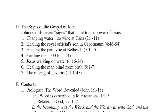Another way that John shows that Jesus is the Son of God — and that the reader should believe in him and receive eternal life — is that John uses seven signs that point to the power of Jesus. Jesus changes water into wine at Cana; he heals the royal official's son in Capernaum; he heals the paralytic at Bethesda; he feeds 5,000 people with a boy's small lunch; he walks on water; he heals a man born blind; and he raises Lazarus from the dead.